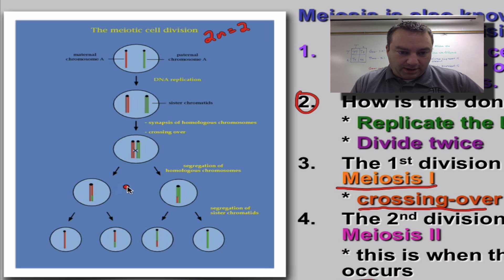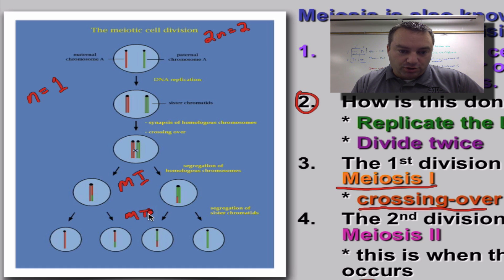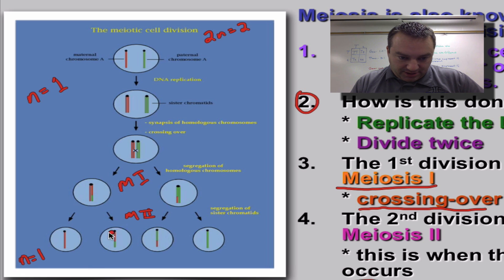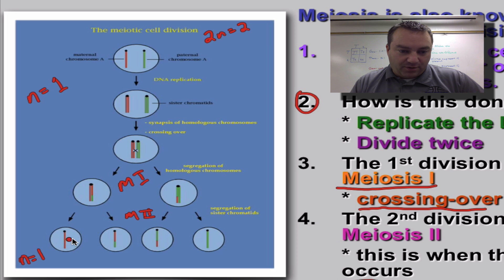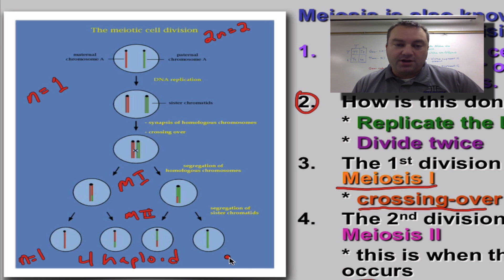Here we have division number one — meiosis number one. We started with two chromosomes and we still have two chromosomes, so N equals two. Then we're going to go through meiosis number two, and you'll notice that all of these cells are haploid — they only have one chromosome each. You'll notice these two in the middle are different because of crossing over. We've got four haploid daughter cells, and because of crossing over, they're all genetically different. That's really important for increasing genetic variety.